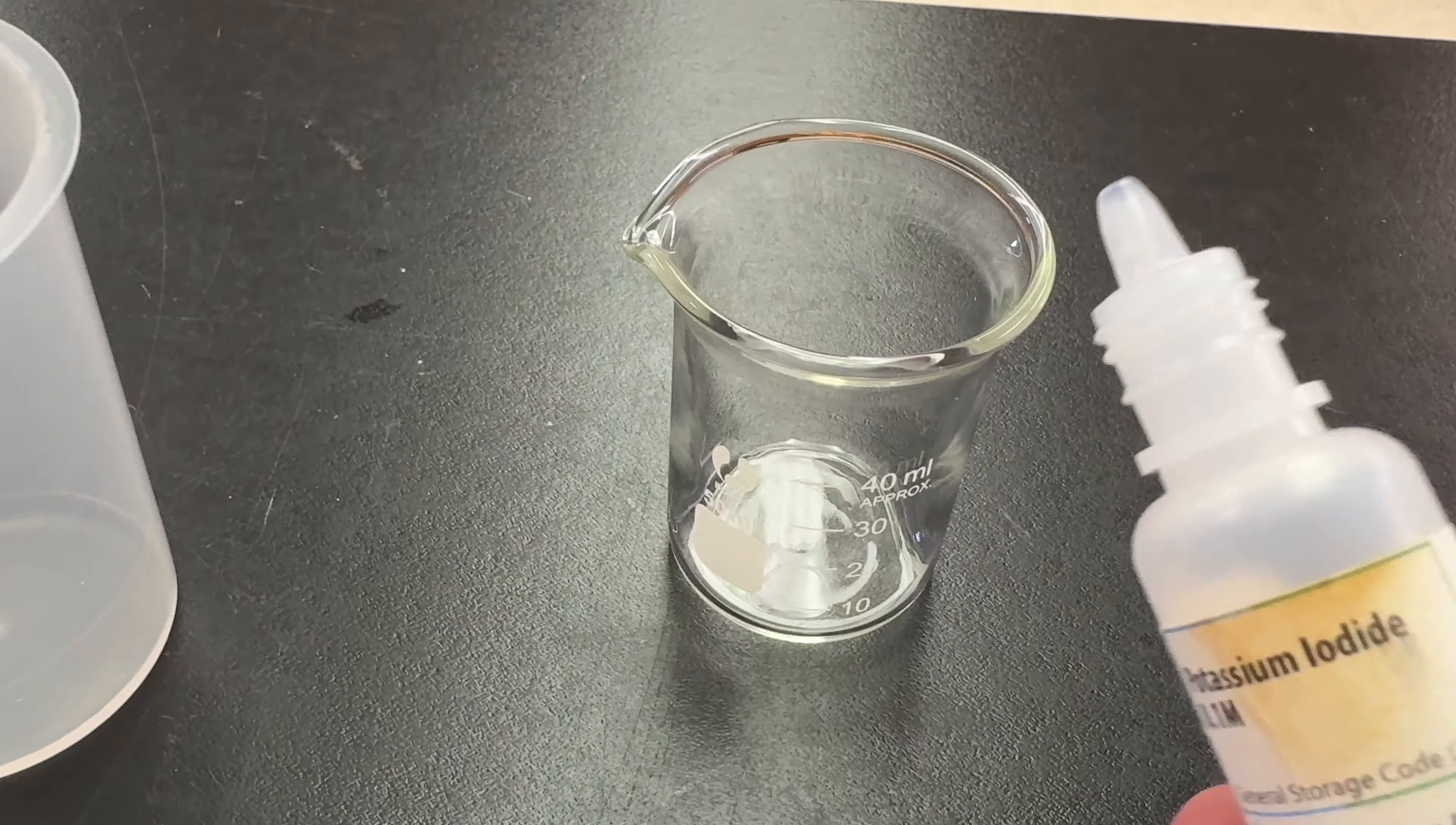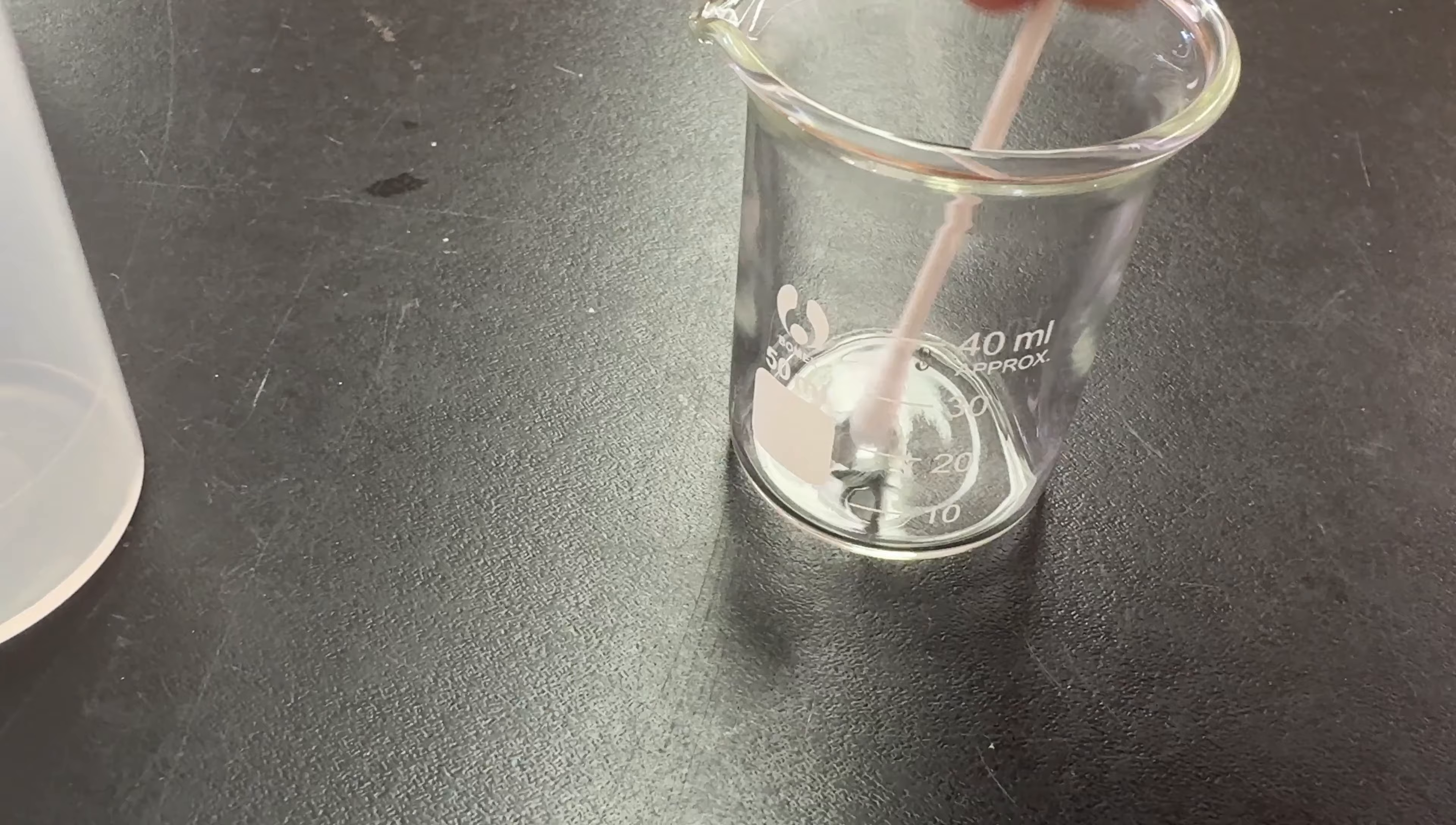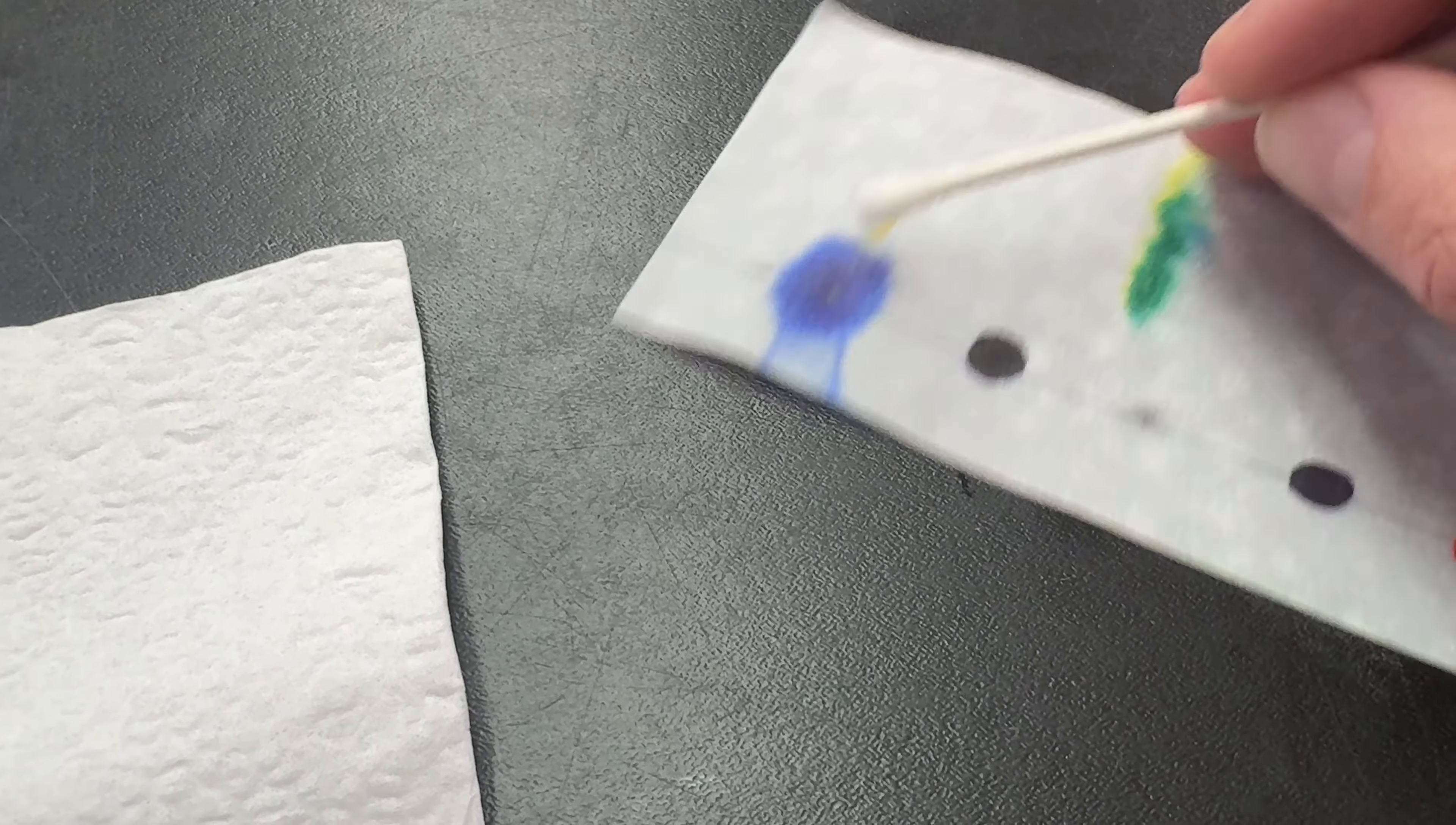Step eight: when the paper is dry, we will need to develop the bromophenol blue streak because it will be invisible. You will put a few drops of potassium iodide in a small beaker and lightly wet a cotton swab in the solution. Dab this along the bromophenol blue streak and it will turn brown as it develops.